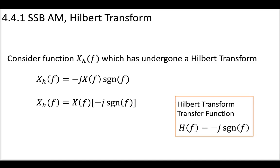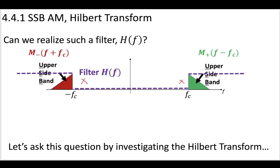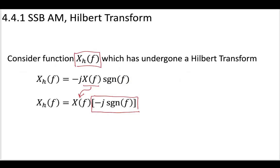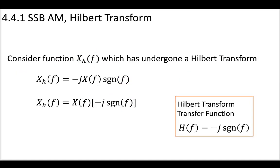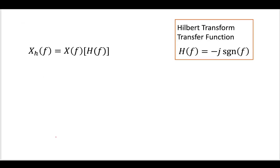We have this Hilbert transformer transfer function, -j signum f, and this is the transform we are looking for. We are trying to figure out if we can get a filter that will remove some of these lower sidebands. We need to put our signal through this Hilbert transformer with this transfer function. Our input x(f) goes through the transfer function, and then we have the Hilbert transformed signal at the output.